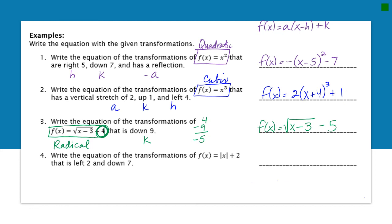The last one also has a function that's already been transformed, and we're adding more transformations: left two is my h value, and down seven is my k value. Right now there is no h value — it's not being translated left or right. Going left two means I use the opposite sign, so x plus two, then close the absolute value bars. For the k value, it's currently up two, but I want to shift down seven, so I subtract seven from two and get negative five. So negative five is my new k value.